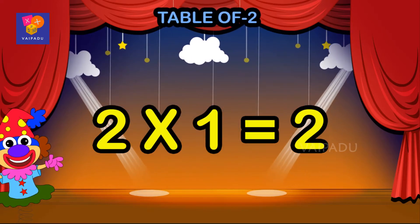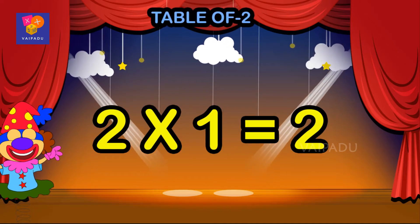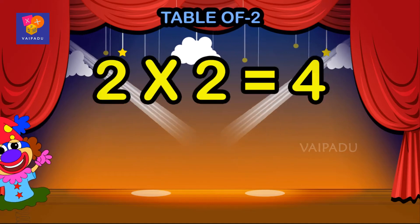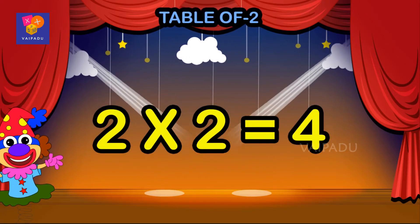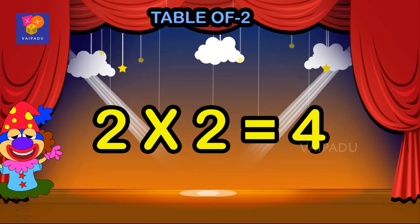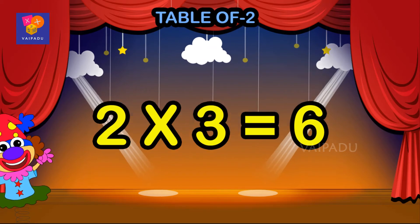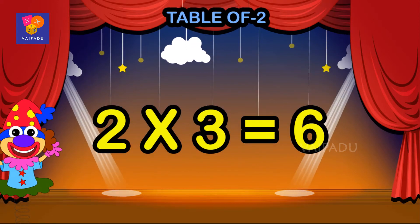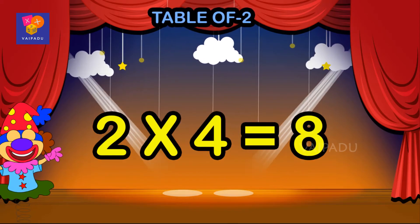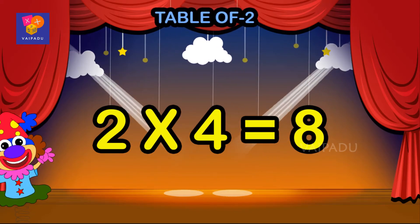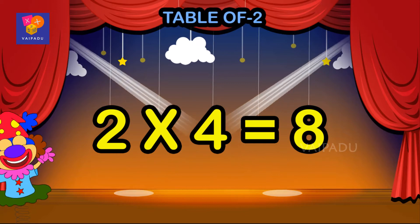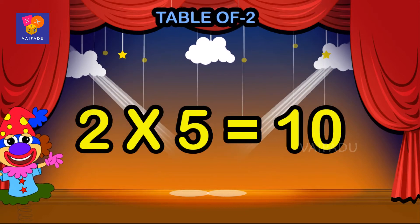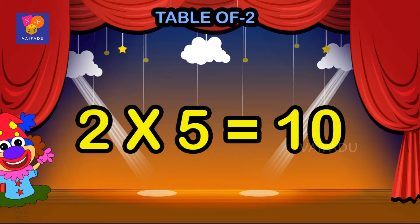Two ones are two, two twos are four, two threes are six, two fours are eight, two fives are ten.